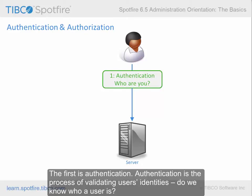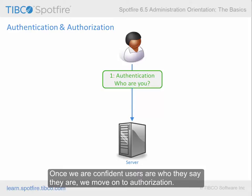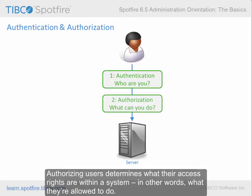Once we are confident users are who they say they are, we move on to authorization. Authorizing users determines what their access rights are within a system — in other words, what they're allowed to do.